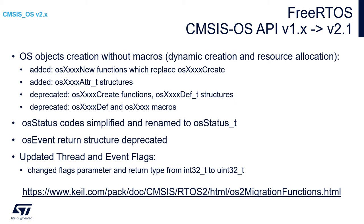The return value — the status value — is simplified and renamed to OS status_t. This _t suffix is visible in many places of the variable name within CMSIS-OS v2, and it can be one of the marks to identify whether we are using v2 or v1.